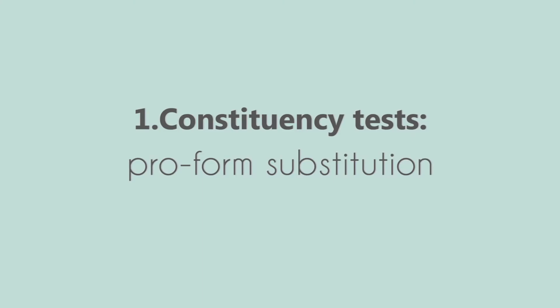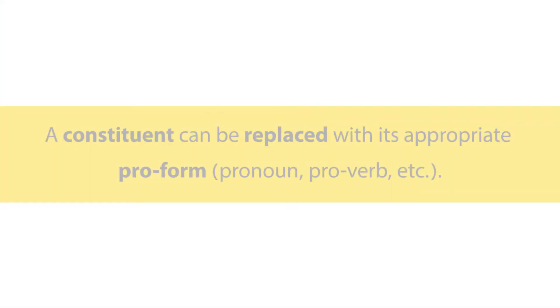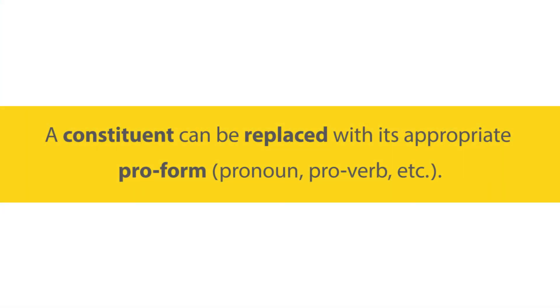One of the tests that can help us determine what group of words is a constituent is that a constituent can be replaced by a pro-form. So if it's a noun phrase, it can be replaced with a pronoun; if it's a verb, it can be replaced with a pro-verb.